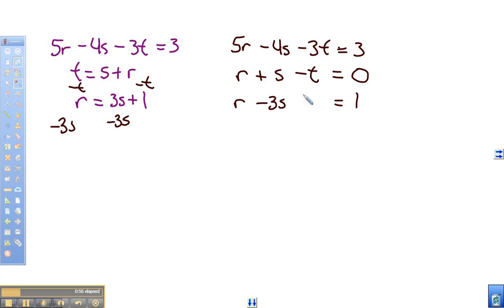So what I want to do is look at these two equations and then figure out how I can eliminate the T. Looking at that, it looks like I can rewrite the first equation: 5R minus 4S minus 3T equals 3.